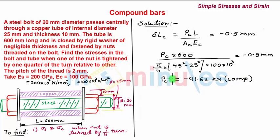Substituting into equation 1, Ps equals +91.62 kN, which is tensile. Now we find the stresses. Stress in the copper tube σc equals Pc divided by Ac.